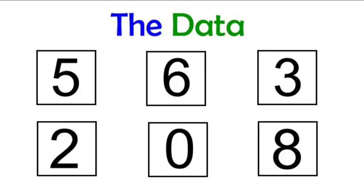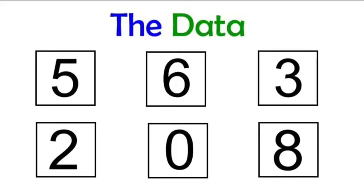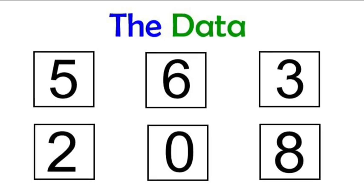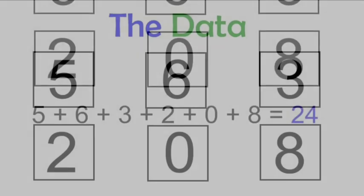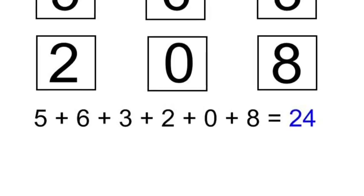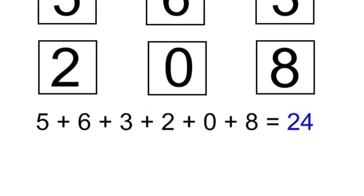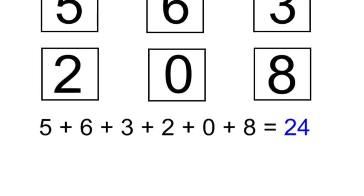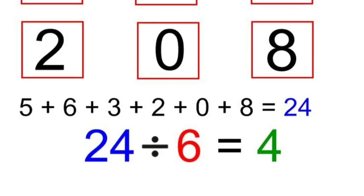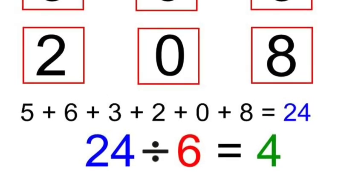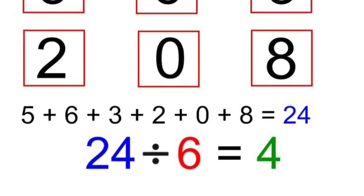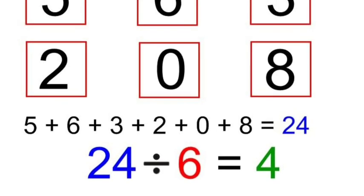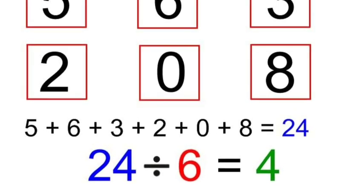So let's conclude with solving a problem with actual numbers. We first have 5, 6, 3, 2, 0, 8 — six different numbers. The first thing I need to do is add them all into one big group. So 5 plus 6 plus 3 plus 2 plus 0 plus 8, I get 24. Then I take that total number, 24, and divide it evenly among the six different groups. So 24 divided by 6, I then get a mean, an average, of 4.